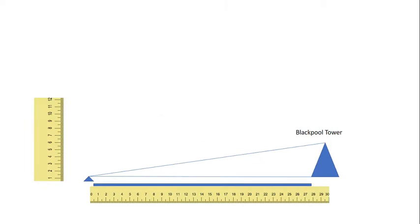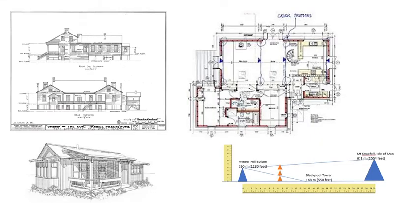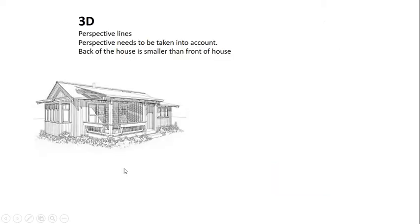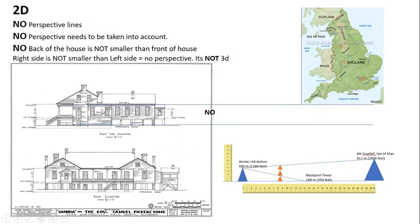Let's draw this out. Here we have a two-dimensional depiction of the situation — an observer at Hoyl Lake observing the Blackpool Tower. Now, perspective is only taken into account in 3D depictions. In 2D we have vertical and horizontal only. In 3D we have a vertical, horizontal, and a z-axis moving away from you — that's when perspective lines apply, like the front of a house appearing larger than the back. In 2D there are no perspective lines.